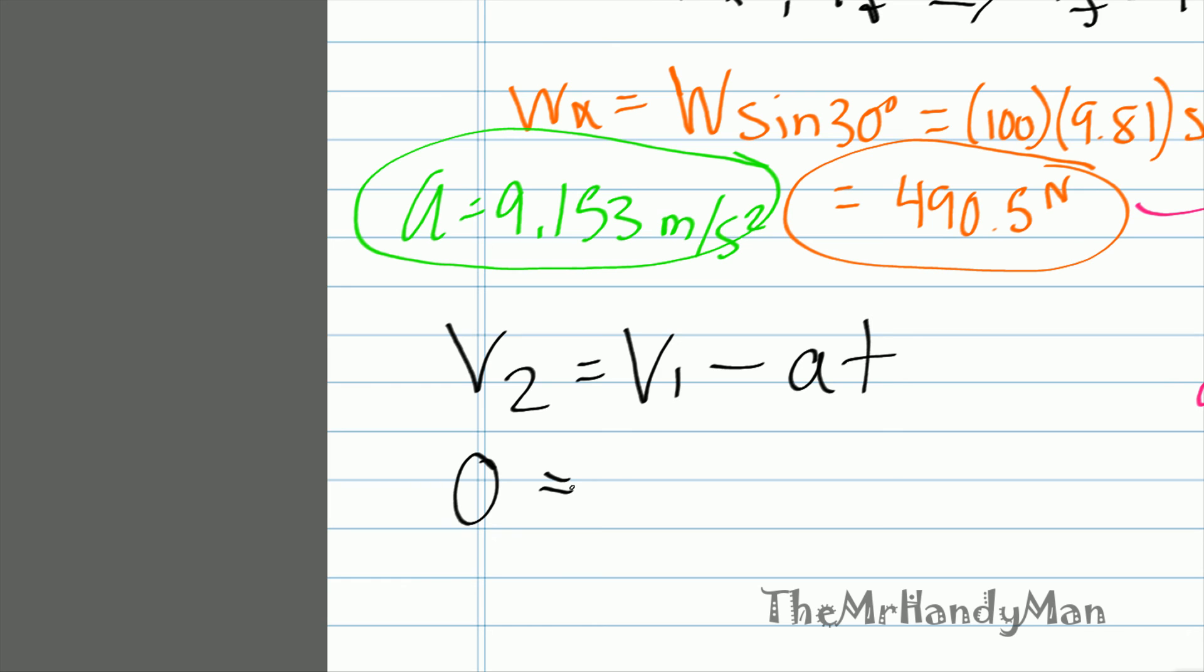Equals v1, which is our initial velocity of 10 meters per second, minus our acceleration, 9.153 times t, which when you work that out, t is equal to 1.093 seconds.